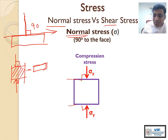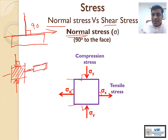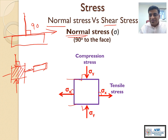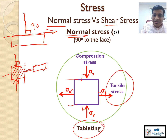You can also apply force perpendicularly but instead of compressing, you stretch the material — that is called tensile stress. Where is tensile stress used? During gym sessions when you use a rubber band or wire to stretch and build your muscles — that's tensile stress. In both compression and tensile stress, the force is applied at 90 degrees to the face.